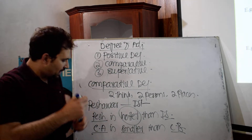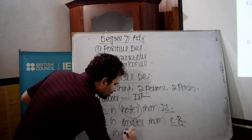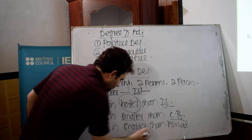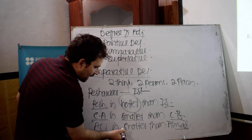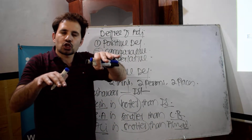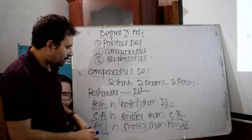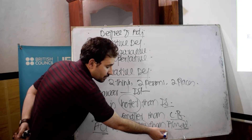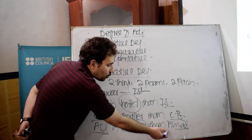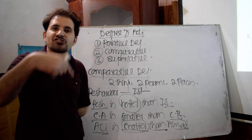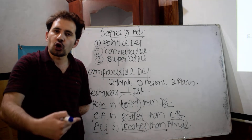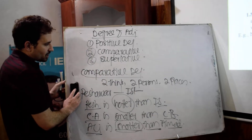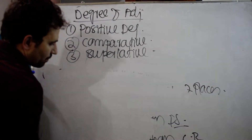For example, 'Ali is shorter than Ahmad' — here I am comparing Ali with Ahmad, comparing their heights. Keep in mind that after the comparative form of an adjective we use 'than': shorter than, smaller than, hotter than, colder than. That 'than' is very important. That's how we compare one thing with another, one person with another, or one place with another.